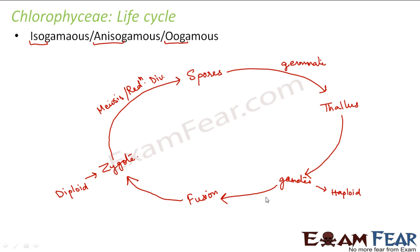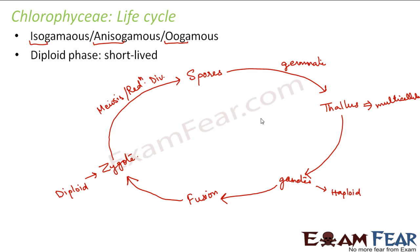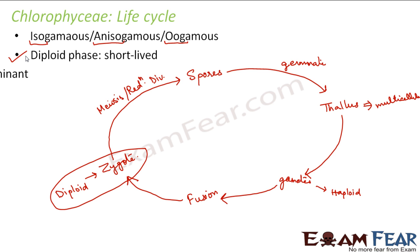The thallus again gives rise to gametes, the gametes fuse to form a zygote, and this cycle keeps continuing. The thallus is the mature multicellular plant — a leaf-like structure. In this life cycle, there is a diploid phase, which is the zygote, but this diploid phase is short-lived. As soon as the zygote is formed, it quickly undergoes meiosis to form haploid spores.